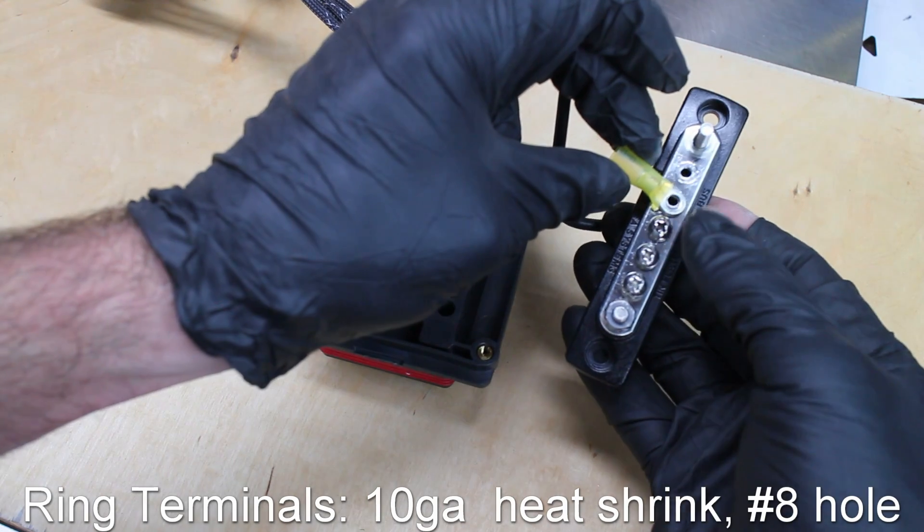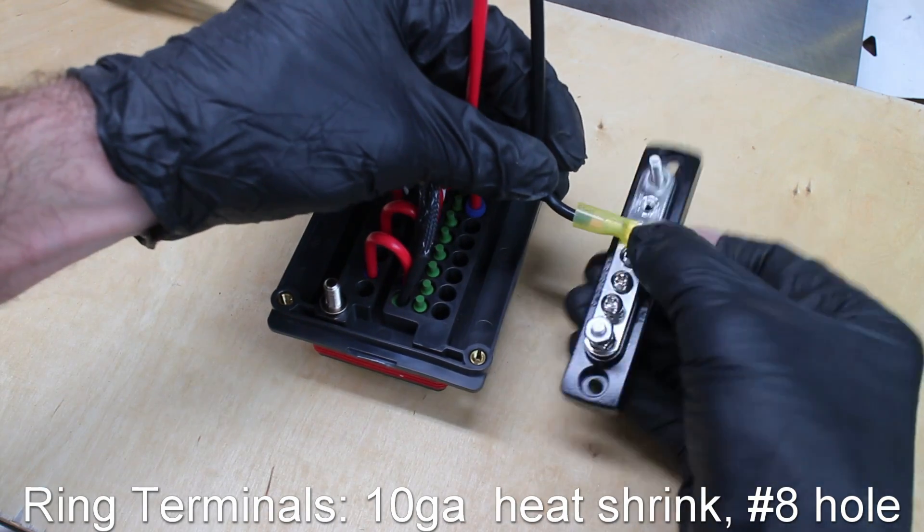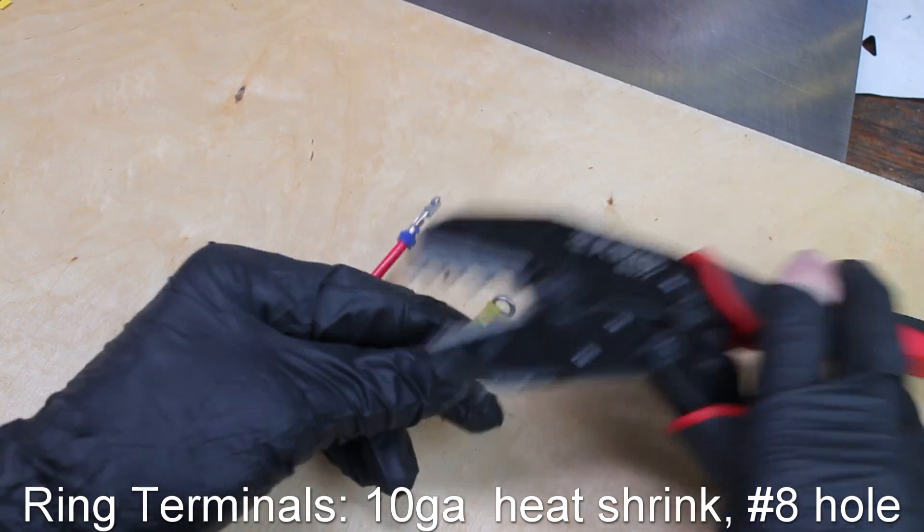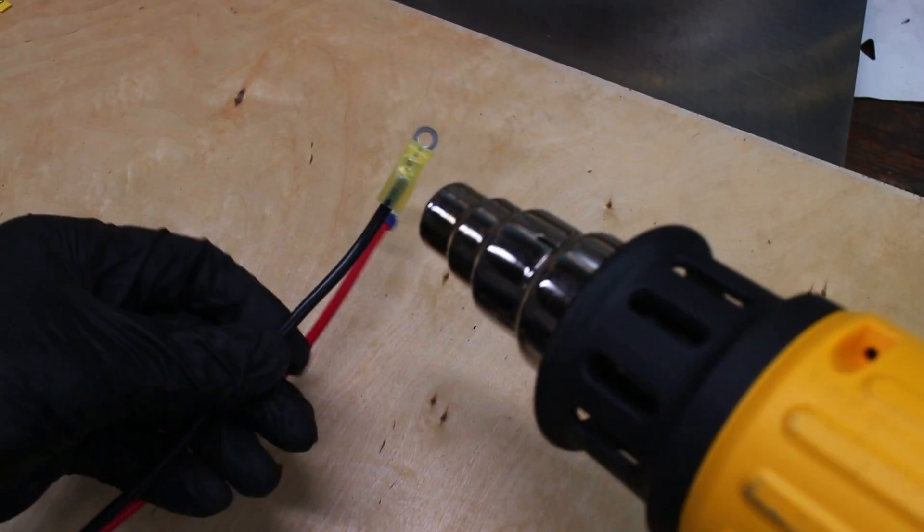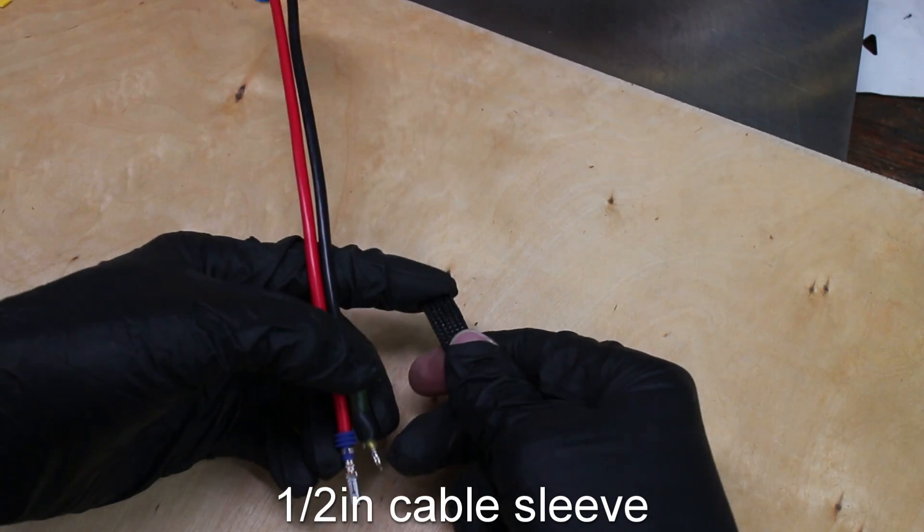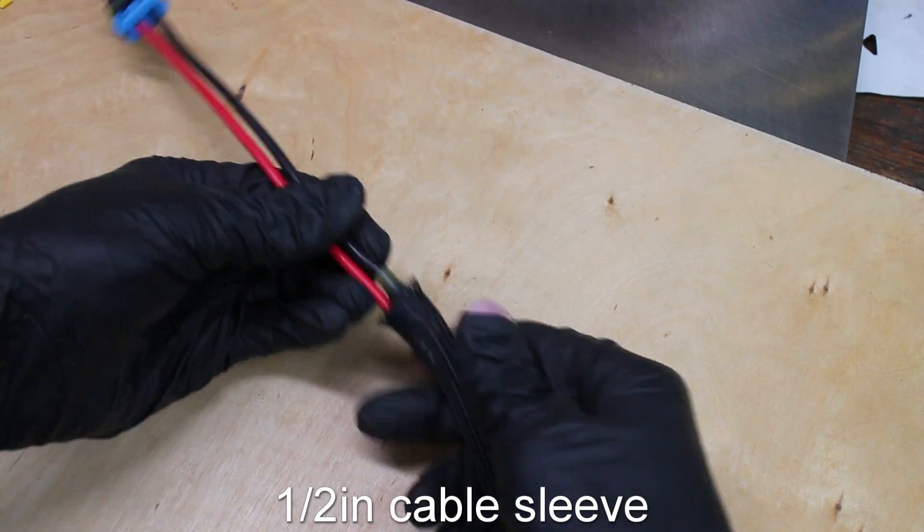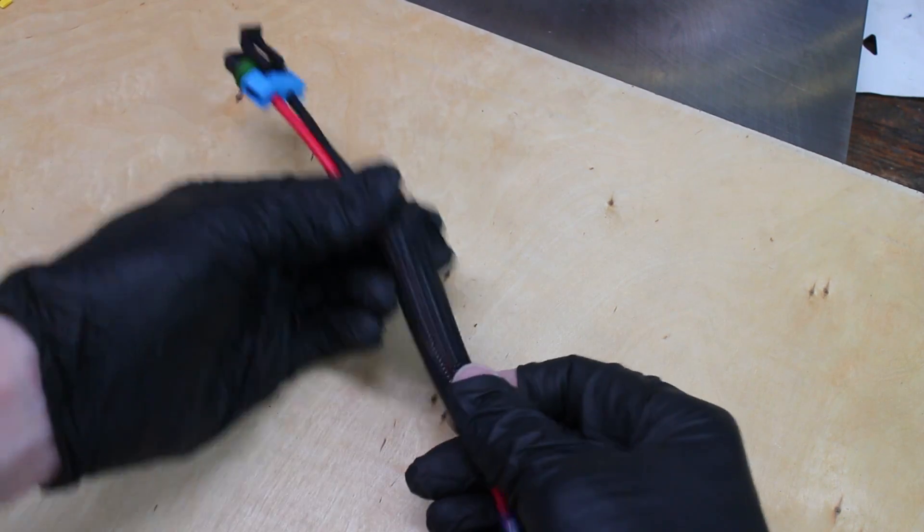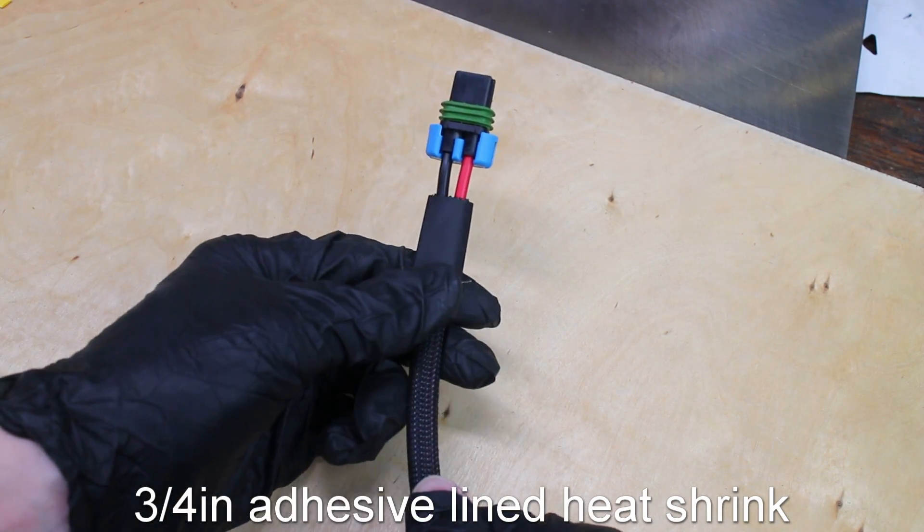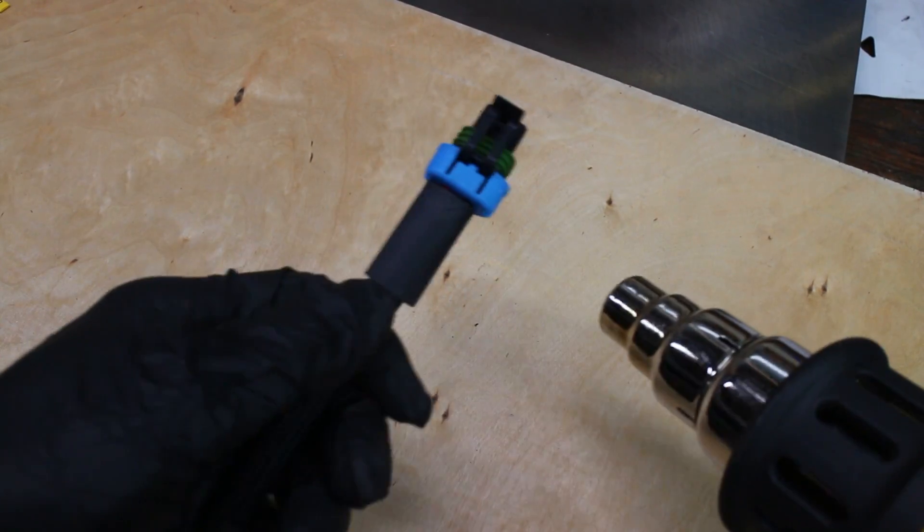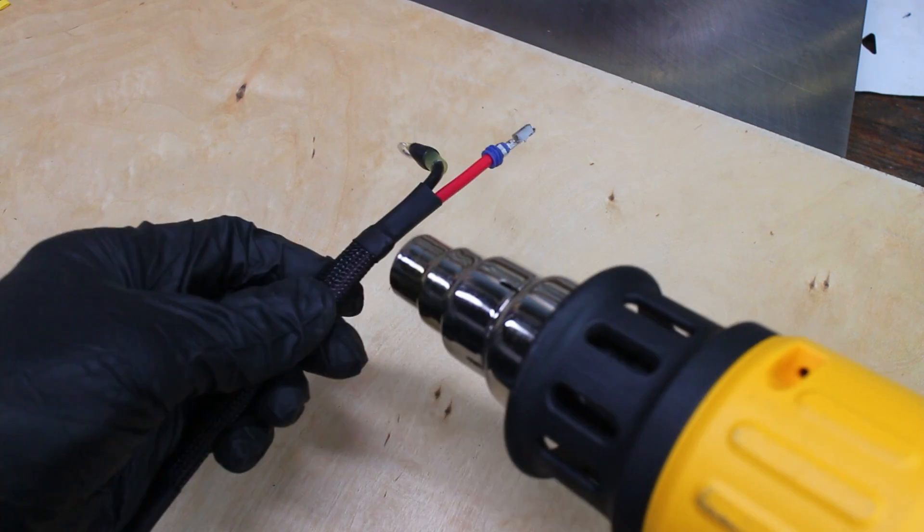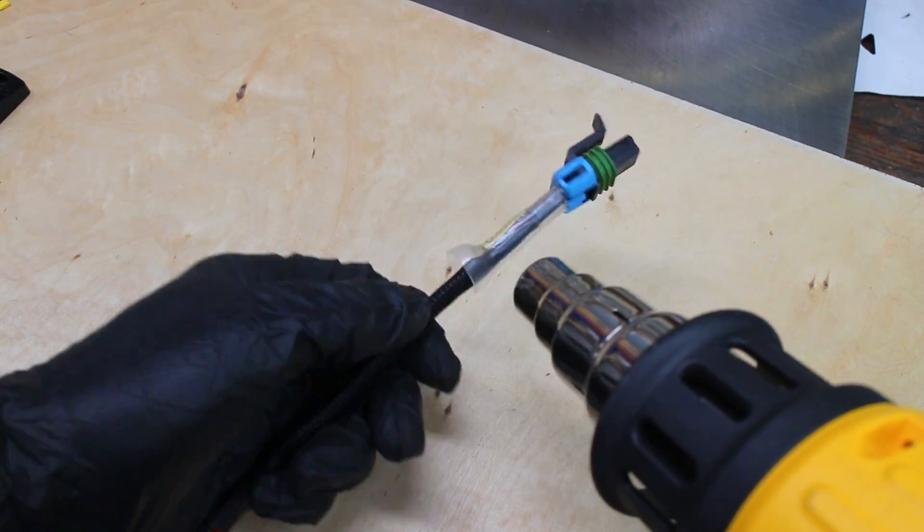A 10-gauge ring terminal is used for this. These 3M terminals have very high-end heat shrink built into them. It's pretty convenient. The wires are protected with wire sleeve and adhesive-lined heat shrink. I went ahead and labeled each plug to make things easy for me.